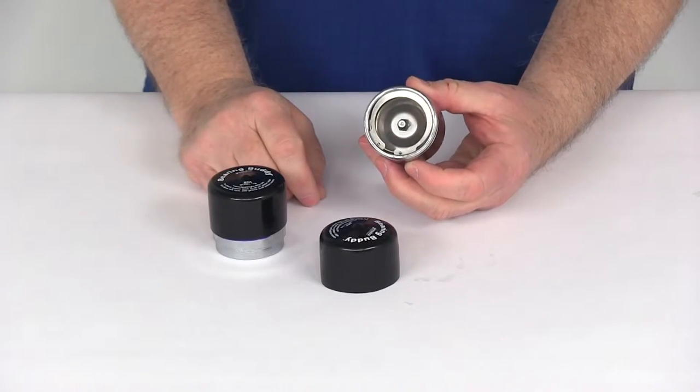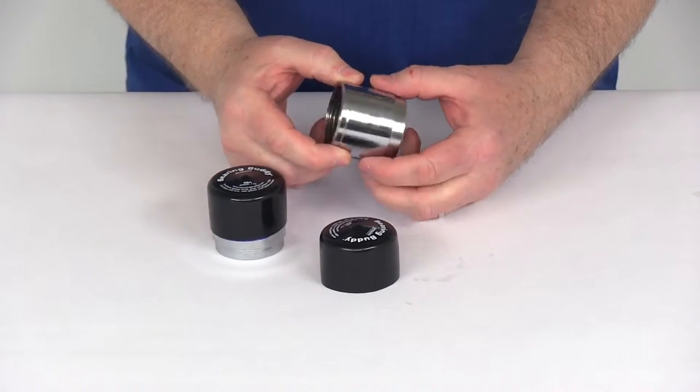This part will replace the grease cap on the end of your axle hub. You just tap this in place of the grease cap.